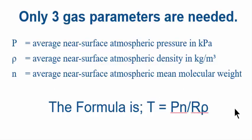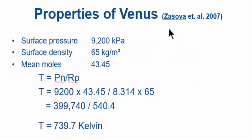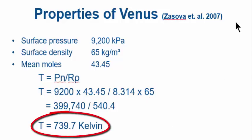Here's Venus. The three properties come from Zasova 2007. You can find them in other papers as well. Surface pressure: 92 bar or 9200 kPa if you like. Surface density: 65 kilograms per cubic meter. Mean molecular weight: 43.45, remember 44 for CO2. Venus's atmosphere is 96.5% CO2 and about 3% nitrogen and bits and bobs of other stuff. Bung them in here, there you go: 739.7 Kelvin.